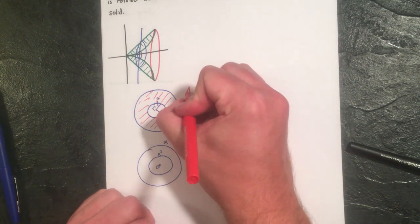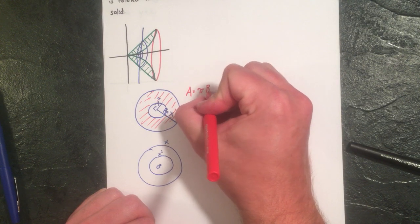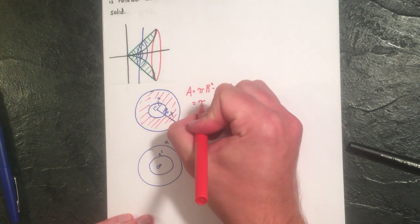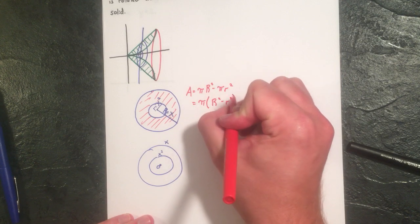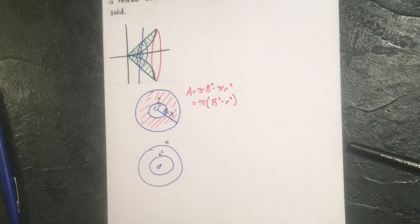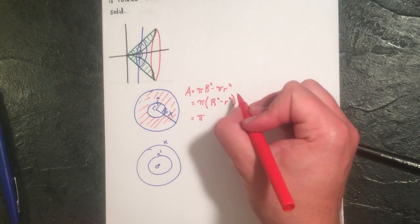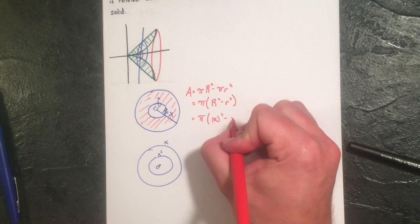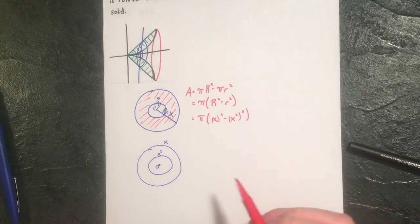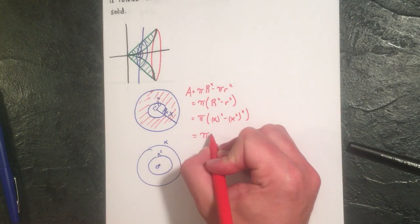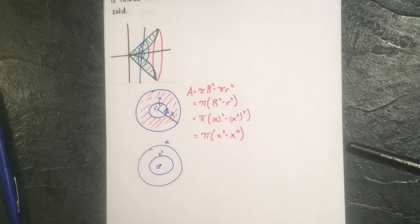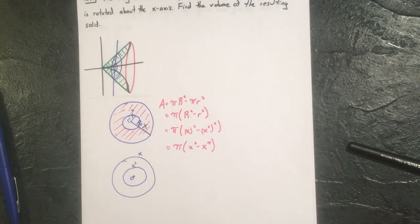So the small radius is x² (minus zero) and the big radius is x (minus zero). The area becomes π(x² − (x²)²) = π(x² − x⁴). Note: we cannot simplify x² − x⁴ into a single term.